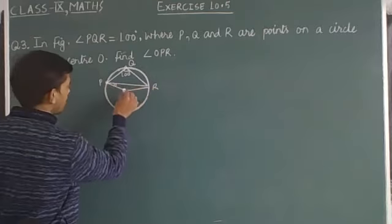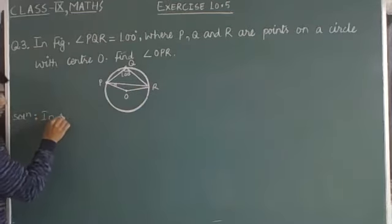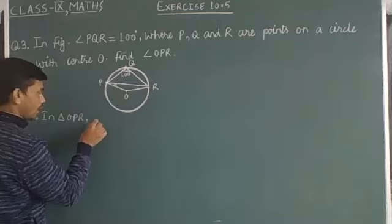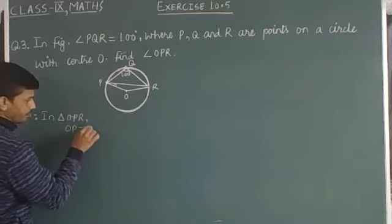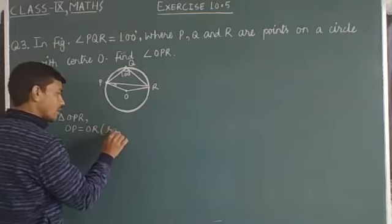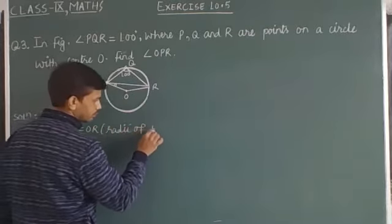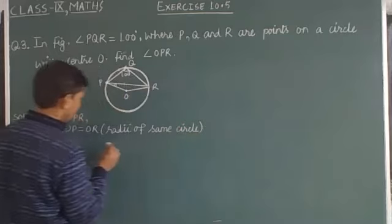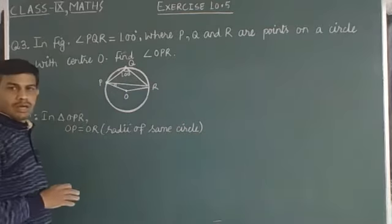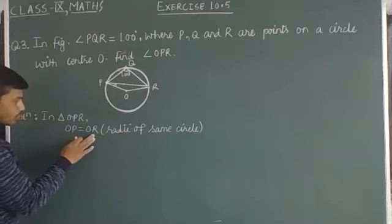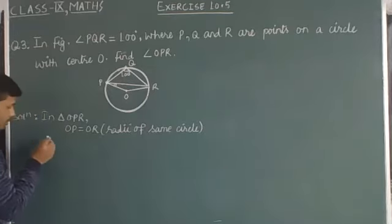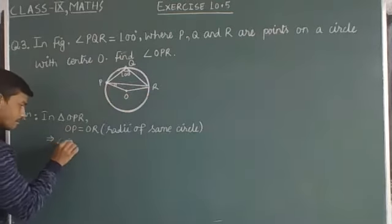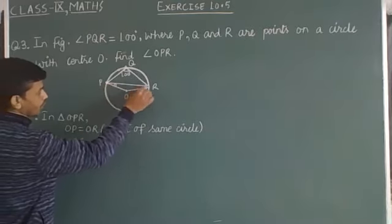Let's observe triangle OPR first. In triangle OPR, we have sides OP and OR equal, because both are radii drawn from the same circle. So triangle OPR becomes an isosceles triangle, in which the angles opposite to these equal sides are equal. So it implies that angle ORP equals angle OPR.